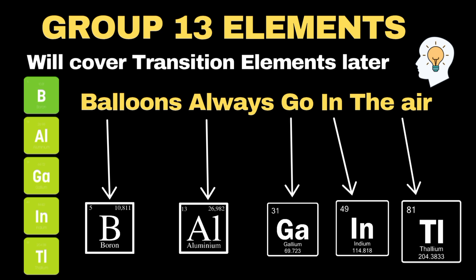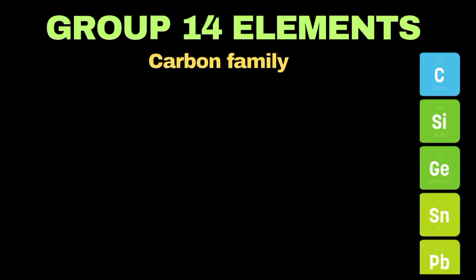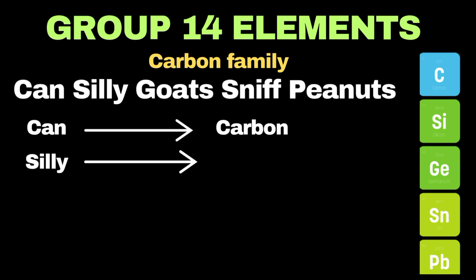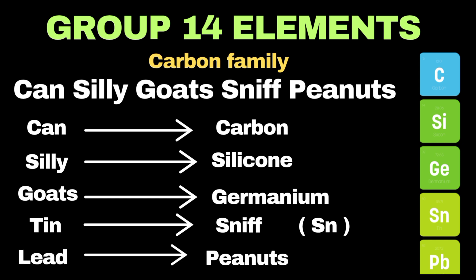Now it's time to discuss tricks to remember group 14 elements, also called the carbon group. Its mnemonic is: 'Can silly goats sniff peanuts.' Here 'can' stands for carbon, 'silly' is used for silicon, 'goats' mentions germanium, 'sniff' shows tin (symbol Sn), and 'peanuts' denotes lead (symbol Pb).